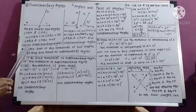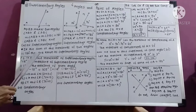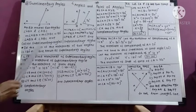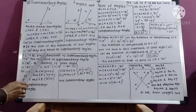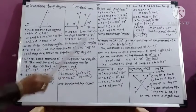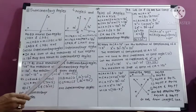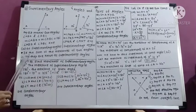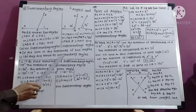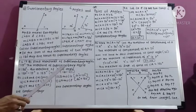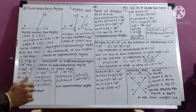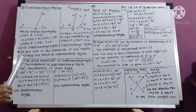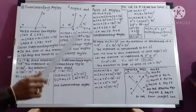Definition of supplementary angles: If the sum of measures of two angles is 180 degrees, they are known as supplementary angles. Note: if the sum of measures of two angles is 90 degrees, they are complementary angles.